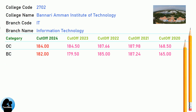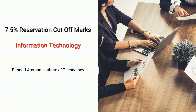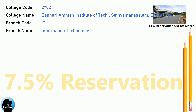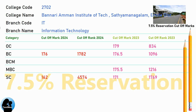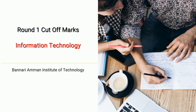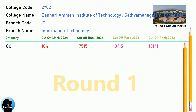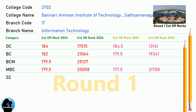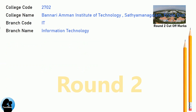DNA Cut-Off for Banari Amman Institute of Technology in Information Technology. DNA 7.5 Reservation Cut-Off, Round 1 Cut-Off, and Round 2 Cut-Off for Banari Amman Institute of Technology in Information Technology.